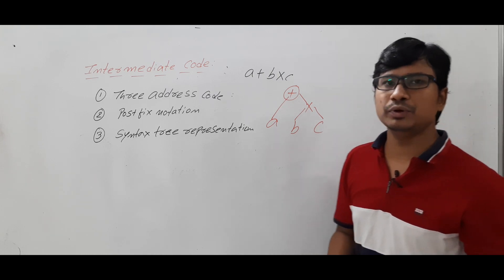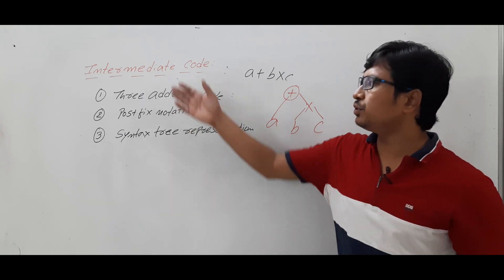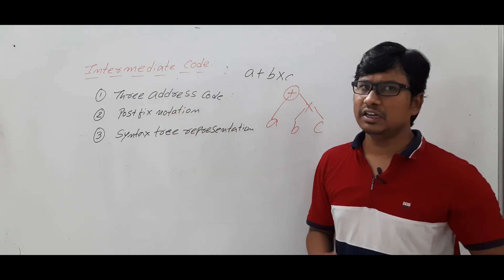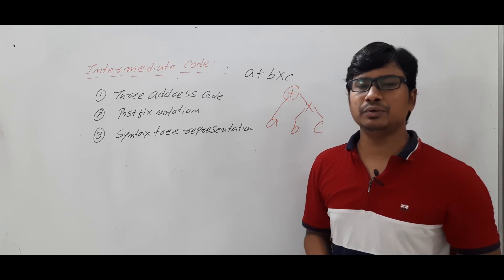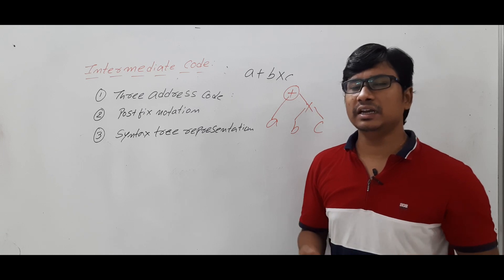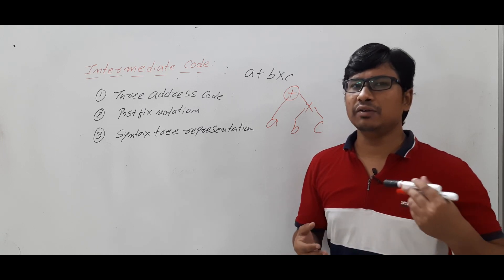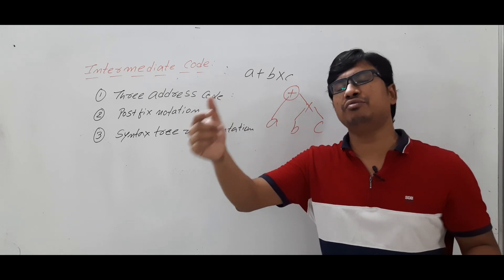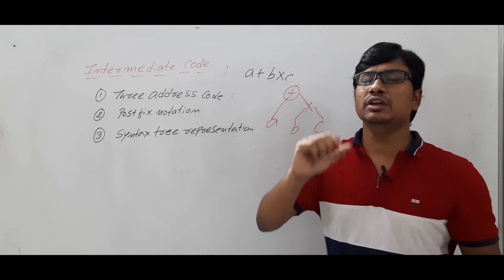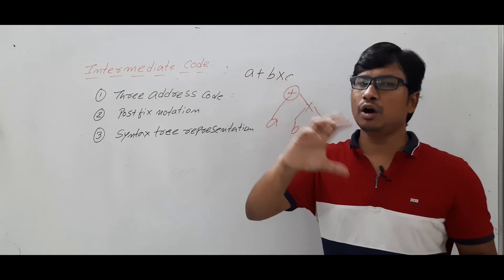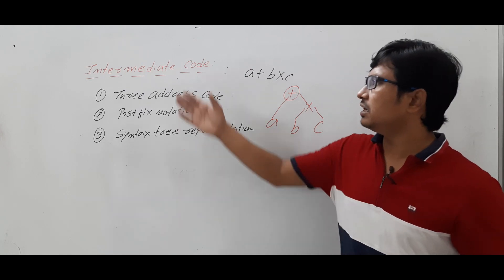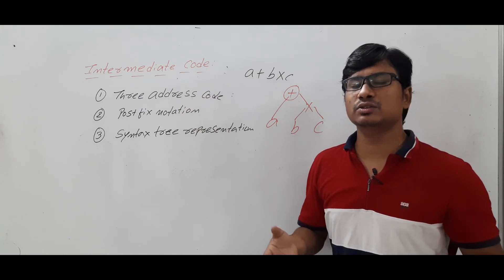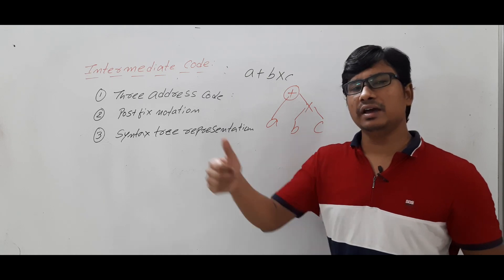With these examples, I hope you have understood the importance of intermediate code and how to represent it in three address code format, postfix notation, and syntax tree representation. If you still have any doubts related to this concept, feel free to ask in the comment section — I will try to clear your doubts in less than 24 hours. In the next video I will discuss three address code in more detail: how to represent functions, arrays, and loops in three address code, since intermediate code is most commonly represented in three address code. Thank you for watching, have a nice day.